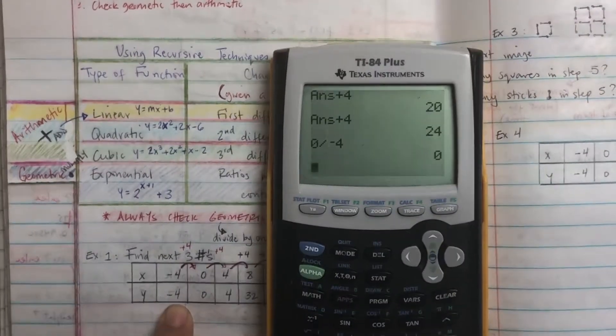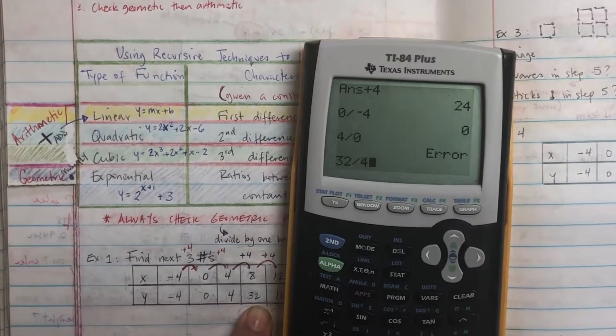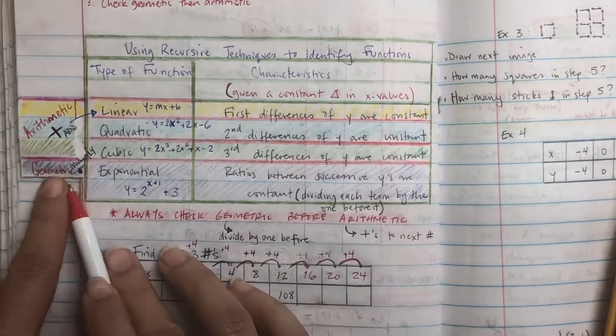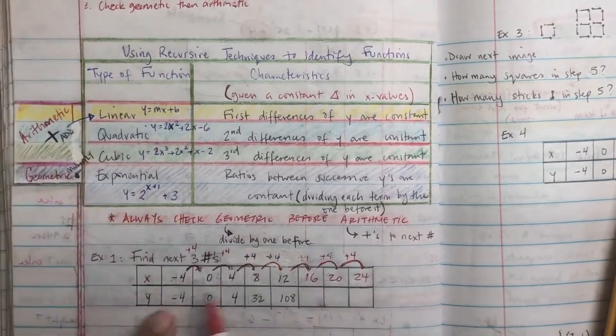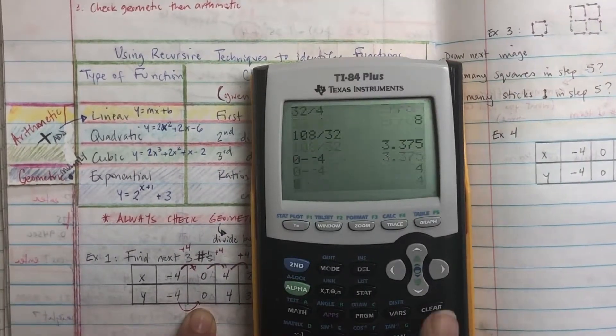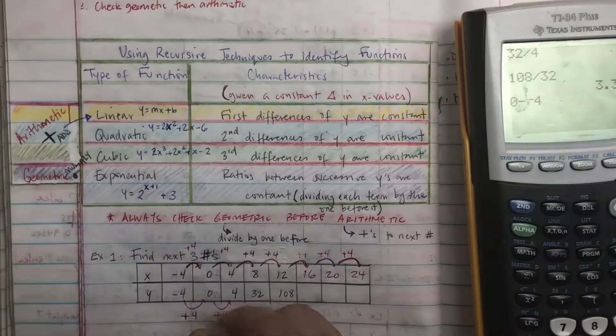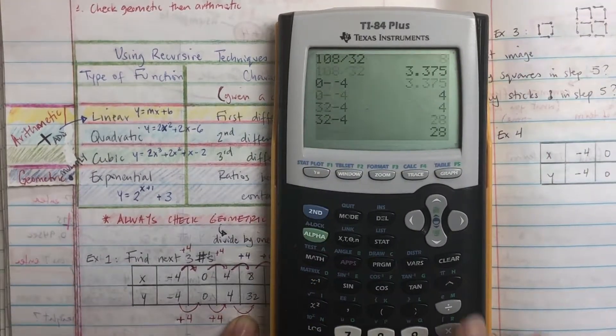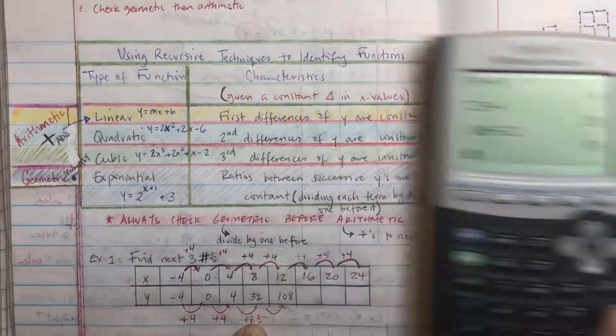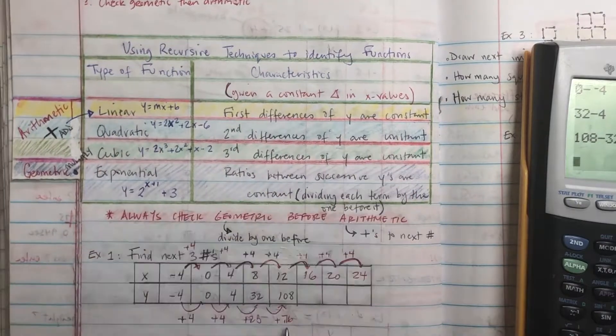So you want to check for exponential. Exponential is ratio. What you do is you take the second number and you divide it by the first. And then the number after that divided by the number after that. If you get the same thing, then it's exponential. But you can see it gives you different numbers. It's not exponential. So now we're going to check if it has a first difference. So you take the second number and subtract it by the first number. Then the third number subtracted by the second number. 32 minus 4, then 108 minus 32. And you can see those numbers are all different. So it's not a first difference. That means it's not linear.